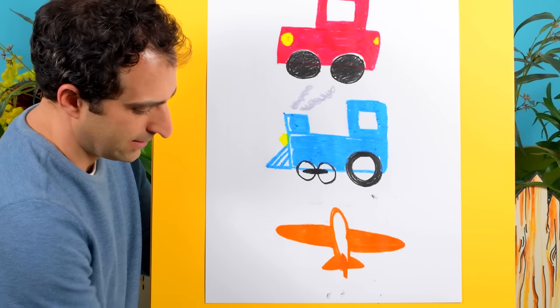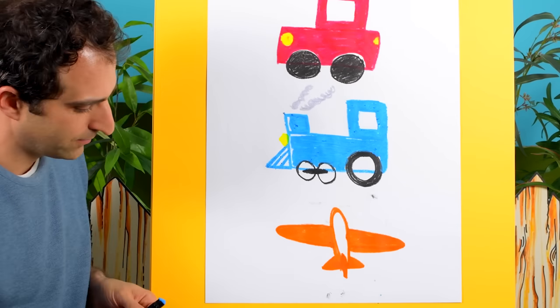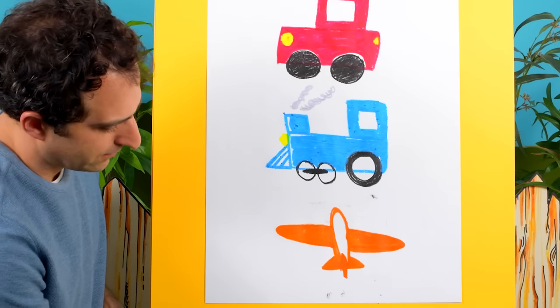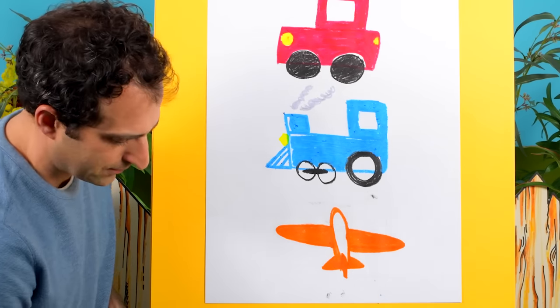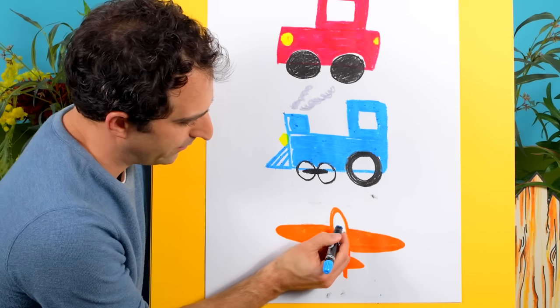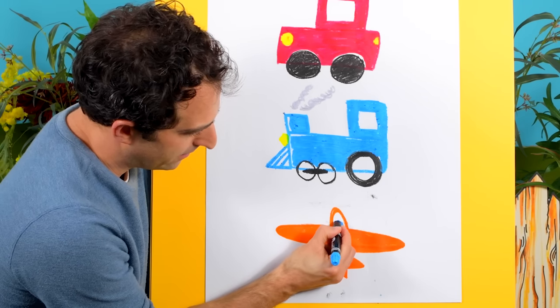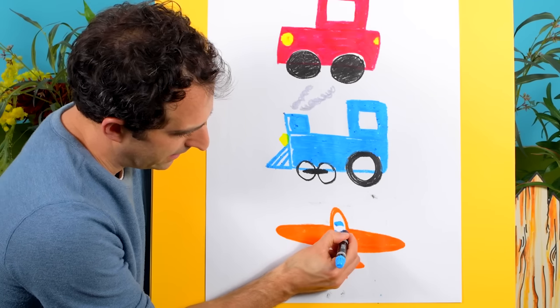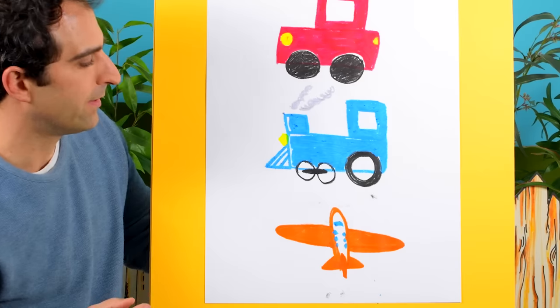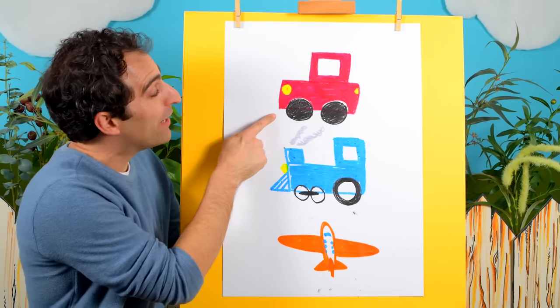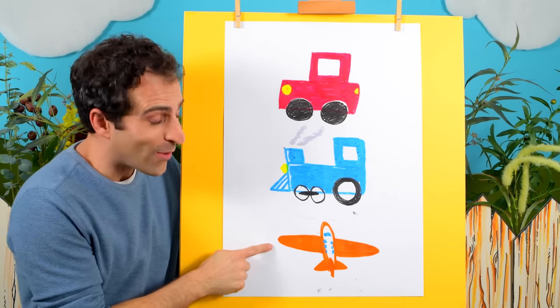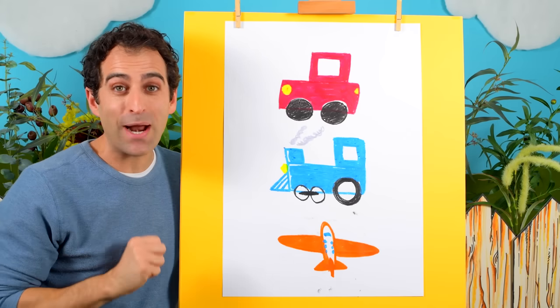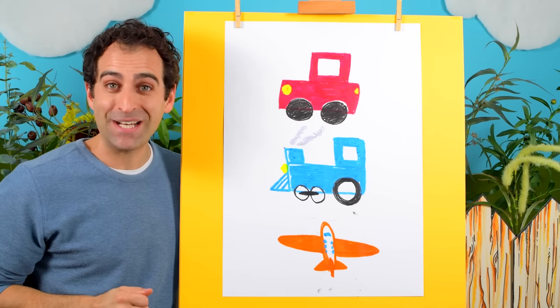And we can add some windows on our plane. Maybe these can be one at the front. And maybe some circles here and here. And there we go. We've got a red car, a blue train, and an orange plane. I hope you enjoyed drawing along with me. Remember to keep practicing. Have fun. And I'll see you next time. Bye.